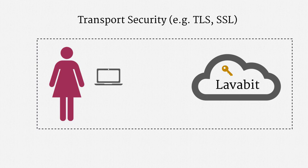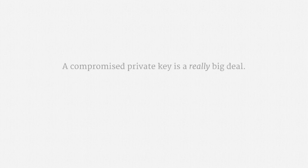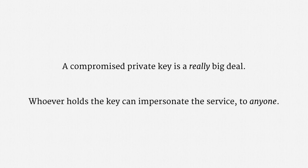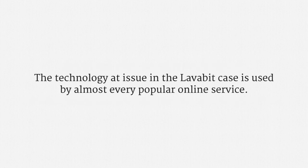That's the type of security that was at issue in the Lavabit litigation. In the world of computer security, a compromised private key is a really big deal — whoever holds the key can impersonate the service to anyone. You may have heard of the Heartbleed vulnerability; much of that concern was precisely about private key compromise. I want to stress that the very same technology at issue in the Lavabit case is used by almost every popular online service — websites, apps, email, you name it. You probably used transport security to load this very video.